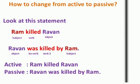Here I explain an example. Look at the statement: 'Ram killed Ravan.' The subject comes first, then verb plus object — that is the active sentence structure. In the passive sentence structure, the object comes first, then the 'be' verb like 'was,' then the third form of the verb 'killed,' then 'by,' and then the subject 'Ram.' So the passive sentence is: 'Ravan was killed by Ram.'